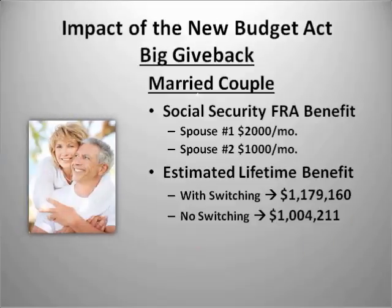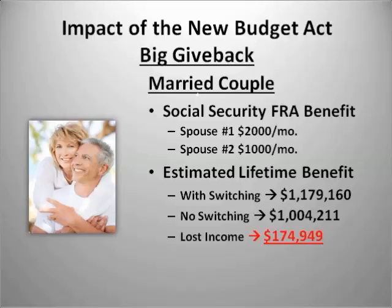For married couples — the husband's benefit at $2,000 a month and spouse at $1,000 — the estimated lifetime benefit with the switching strategy was $1.179 million, versus just over $1 million without switching. The total lost income is almost $175,000. That's a huge hit. Because two benefits were available through switching strategies, that money is now gone, and we need to find ways to replace that income. This is where the Social Security report helps identify gaps and how to close them.